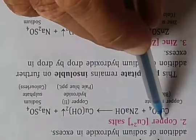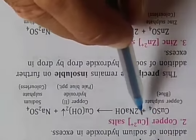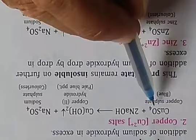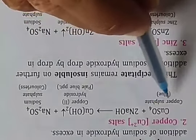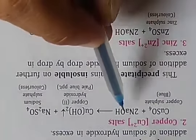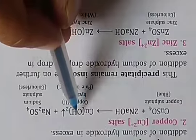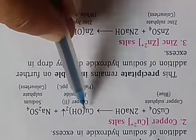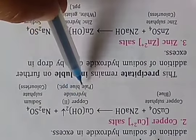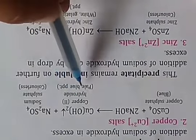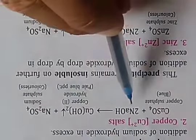The ferric hydroxide precipitate also remains insoluble on further addition of excess sodium hydroxide. Next is copper salt. When copper sulfate (CuSO4), which has a blue color, reacts with NaOH, it forms cupric hydroxide, which precipitates out in the solution. The color of this cupric hydroxide precipitate is pale blue. The appearance of a pale blue precipitate indicates the given salt is a copper salt.